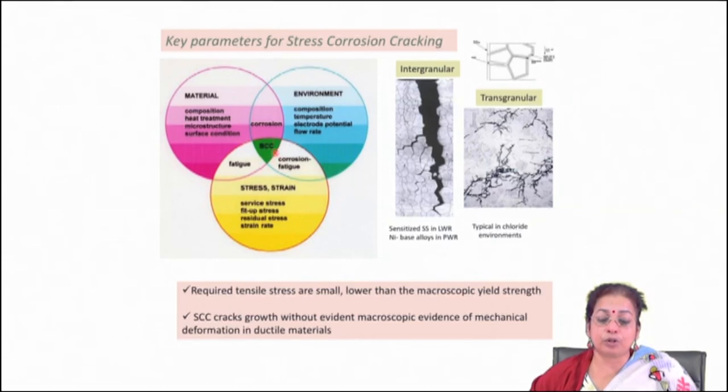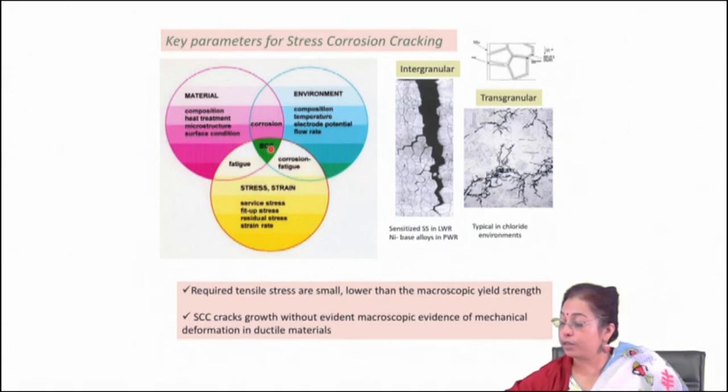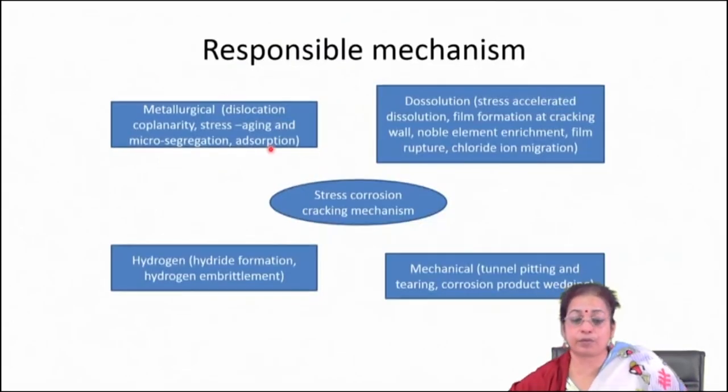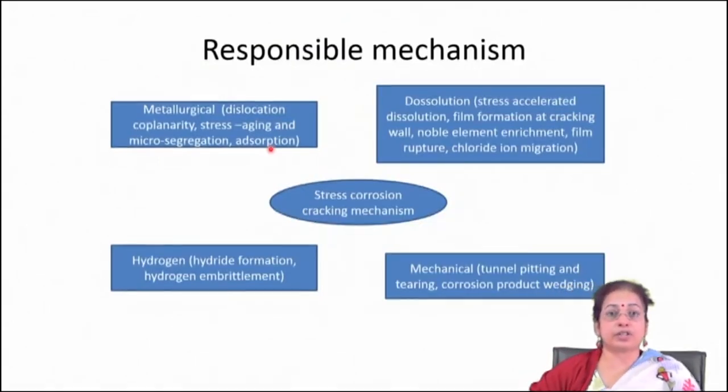The stress corrosion cracking map shows that it occurs in the overlap region of material, environment, and stress. The material can also undergo corrosion fatigue under fluctuating stress in a corrosive medium. Knowing this region properly allows you to avoid the problem by choosing the proper environment and stress conditions.